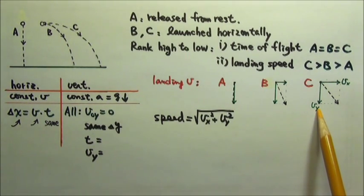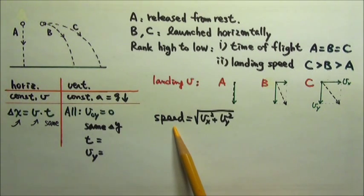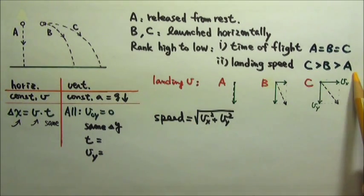They all have the same Vy, so the higher the Vx, the higher the landing speed. So of course we get the same answer, C, B, A.